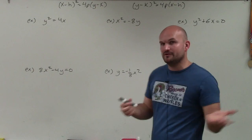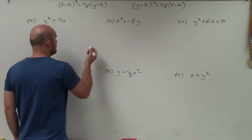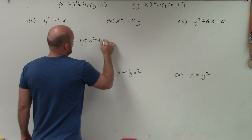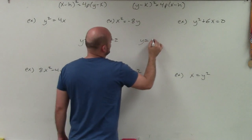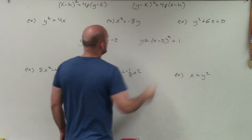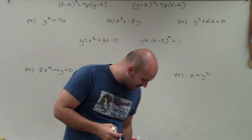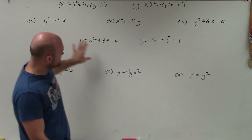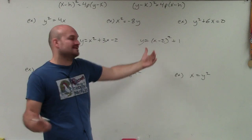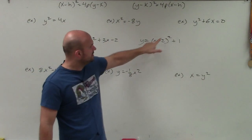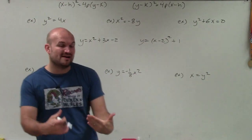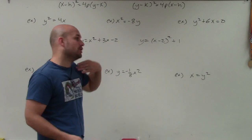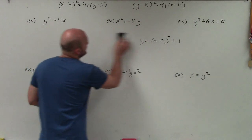How do you know, based on these equations, if it opens up, down, left, or right? Going back to y = x² + 3x − 2 or y = (x − 2)² + 1 — these are quadratic equations that produce a parabola that's either up or down. The key point is that x is always squared, so whenever x is squared, the graph opens up or down. Whereas if y is squared, the graph is going to open left or right. That's the first thing I identify.